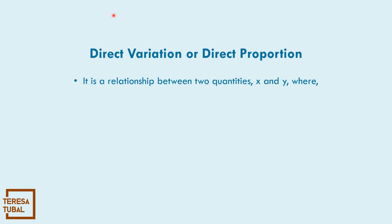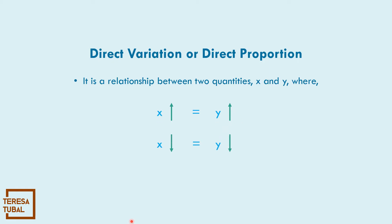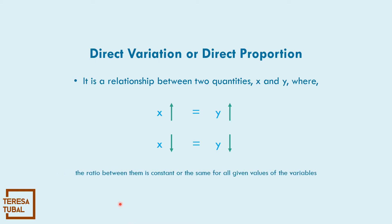What could be the meaning of direct variation or direct proportion? It is a relationship between two quantities, x and y, where if x increases, also y increases. If x decreases, also y decreases. The ratio between them is constant, or the same, for all given values of the variables.